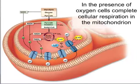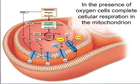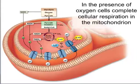Since the electron transport chain requires oxygen as the final electron acceptor, the complete oxidation of glucose can only occur in the presence of oxygen. This is particularly for eukaryotes. Prokaryotes can do the electron transport chain and produce a decent amount of ATP without oxygen using another molecule as electron acceptor, and you can review that in the other resources that we have available.